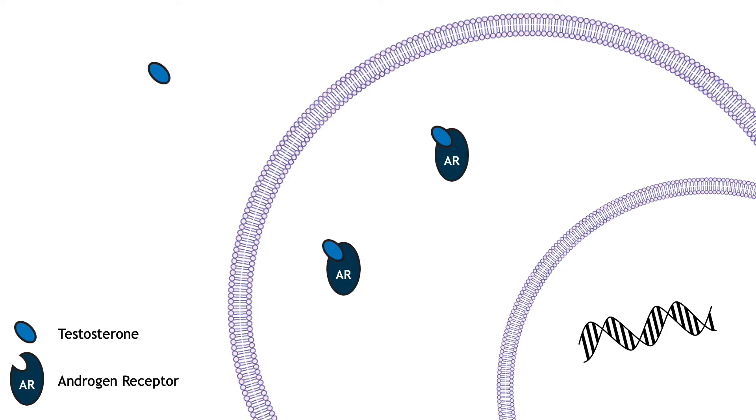Androgen receptors bind androgens like testosterone, while estrogen receptors bind estrogens like estradiol. When a hormone binds to a receptor in the neuron, the hormone-receptor complex dimerizes and moves into the nucleus, where it can bind to specific sites on the DNA and act as a transcription factor to turn on or off certain genes.